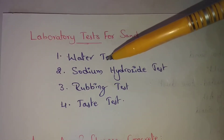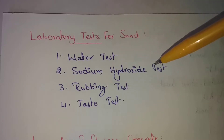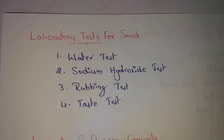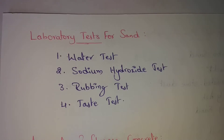Next, the sodium hydroxide test. If there are any impurities in the sand, we can find them out using this test. Take a small test tube or a small glass flask and place some sand into it.